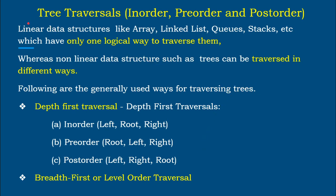The difference between linear and non-linear data structures is that in linear data structures such as arrays, linked lists, queues, and stacks, there is only one logical way the elements can be traversed. But in the case of non-linear data structures like trees, traversal can happen in different possible ways — depth-first and breadth-first. In-order, pre-order, and post-order come under depth-first traversal.